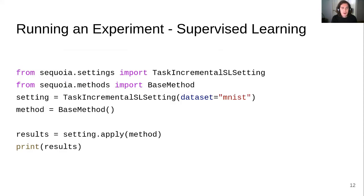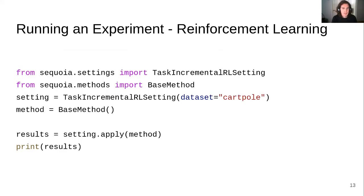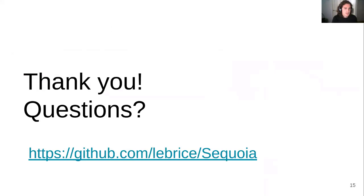Here's how you would run an experiment in supervised continual learning — in this instance, task incremental supervised learning using Sequoia. You simply import a method and apply it on a setting to get results. And here's the same for reinforcement learning. That's it. Thank you very much, and I look forward to hearing from you on our GitHub page.